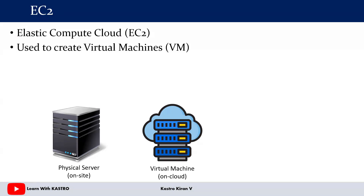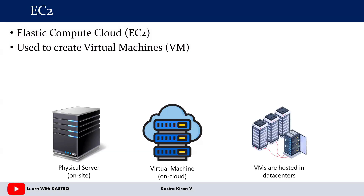Where do these virtual machines get created? Virtual machines are going to get created in the data centers of AWS Cloud. AWS global infrastructure is divided into multiple layers such as regions, availability zones, elastic edge caches, and regional edge caches. The virtual machines get hosted inside the data centers that are available inside an availability zone and also inside a region.